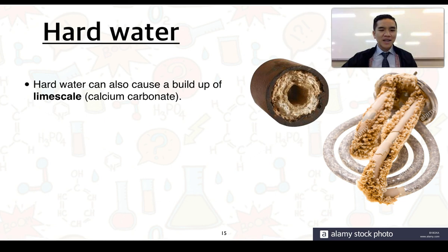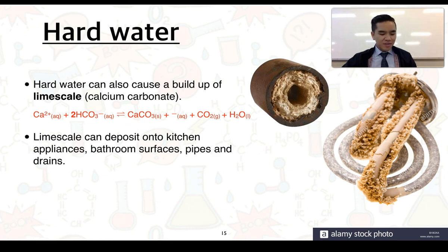Another problem with hard water is that it can also cause the buildup of limescale, which is calcium carbonate. Limescale forms because the calcium ions in hard water can react with hydrogen or bicarbonate ions in water and produce calcium carbonate solid, as well as carbon dioxide and water. So this forms an insoluble precipitate itself. This limescale can deposit onto kitchen appliances, onto bathroom surfaces, pipes, and drains. We can see limescale buildup on a heating element here, which could be in a kettle, and we can see limescale deposits within some piping here.